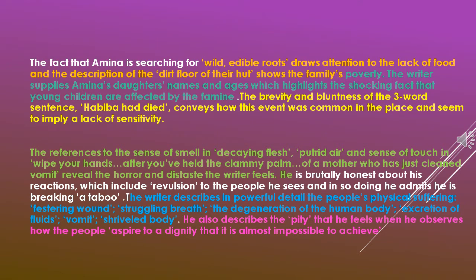The fact that Amina is searching for, and I quote, 'wild edible roots' draws attention to the lack of food, and the description of the dirt floor of their hut shows the family's poverty. The writer supplies Amina's daughter's names and ages, which highlights the shocking fact that young children are affected by the famine. The brevity and bluntness of the three-word sentence — 'Habiba had died' — conveys how this event was common in the place and seems to imply a lack of sensitivity.